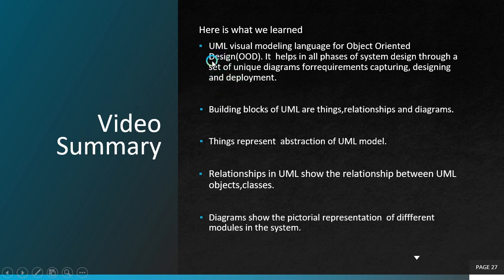In summary, UML is a visual modeling language that helps identify requirements during all phases of system design. The building blocks of UML are things, relationships, and diagrams. Things represent the abstraction of the model; relationships show the connection between UML elements; and diagrams show the pictorial representation of different modules in the system.